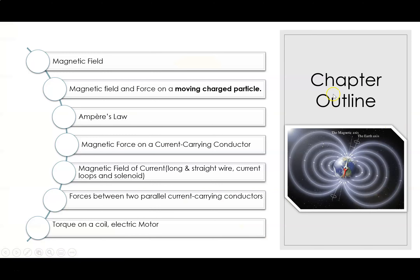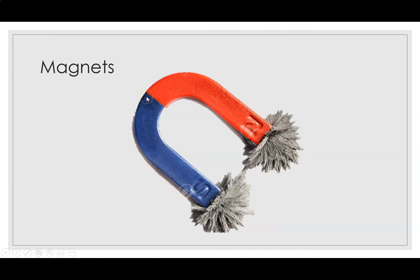This is the chapter outline that we will cover in this topic. There are seven subtopics for this chapter. You have all probably played with some type of magnet in your life — for example, a horseshoe magnet like shown here, that can pick up iron-containing objects like paper clips.